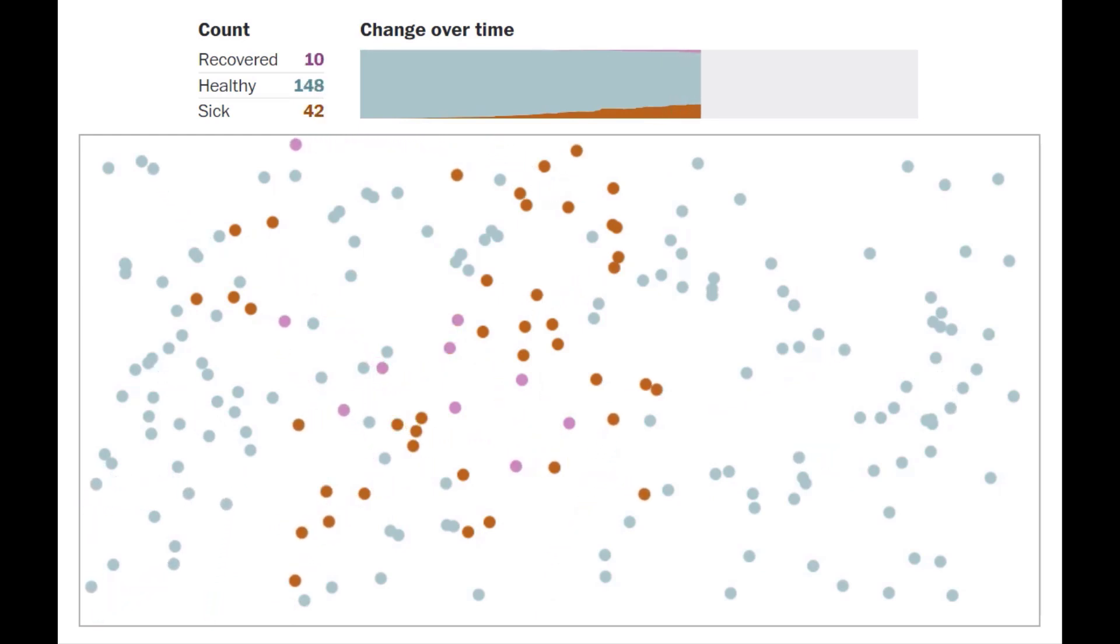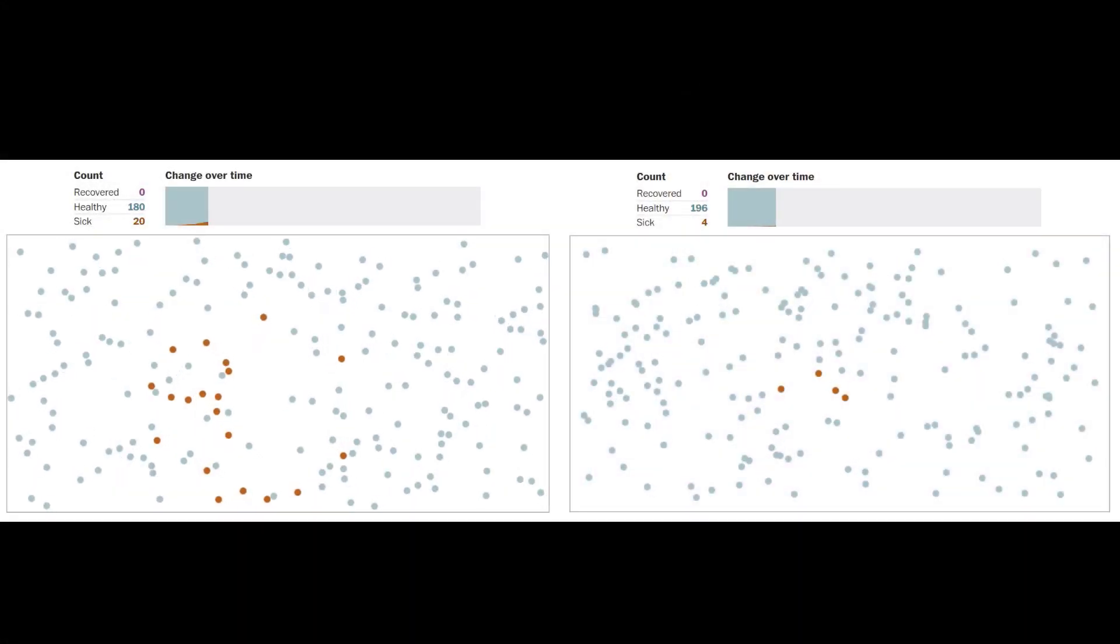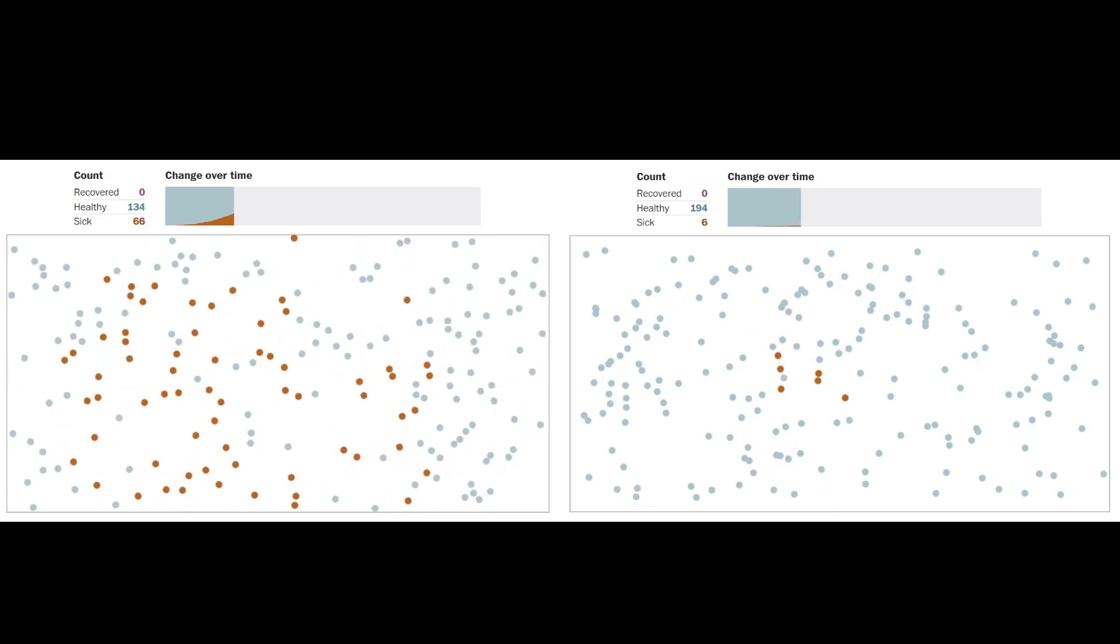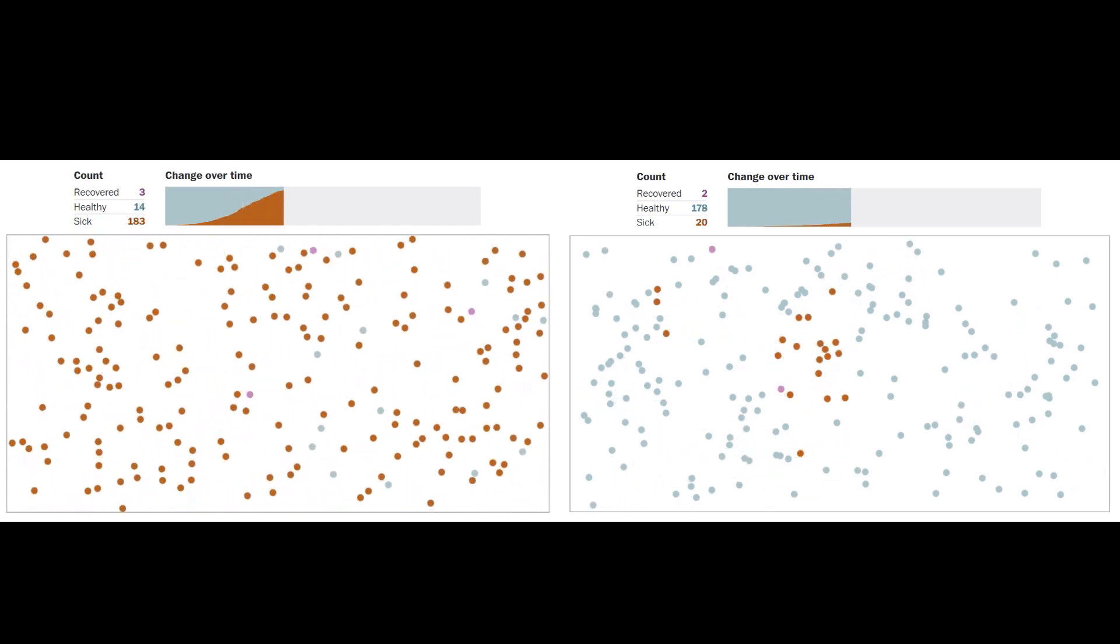In a real virus like COVID-19, social distancing can not only reduce the demand on ventilators, it can buy time for treatments and cures. Let's take a look at these two scenarios again side by side to see the difference. Social distancing is the most important thing any one person can do to save their own life and the lives of others in this crisis.